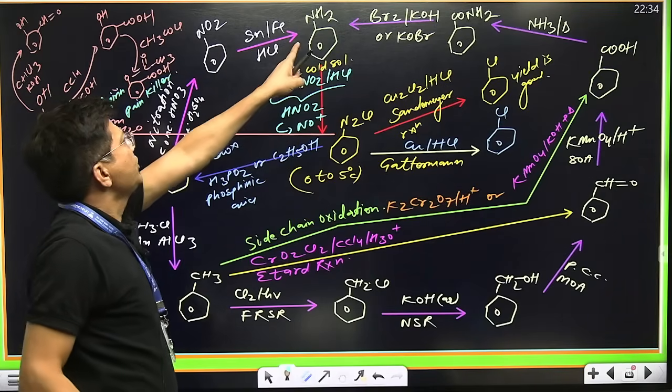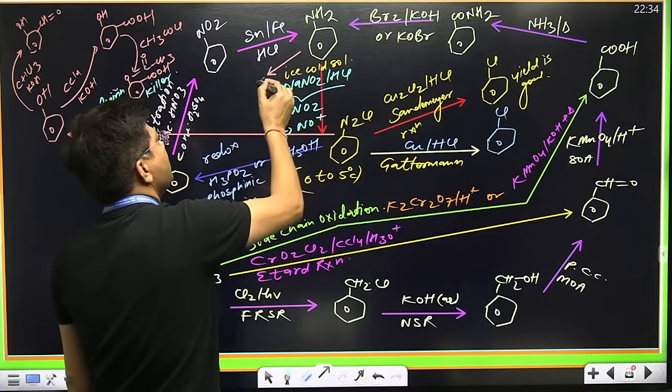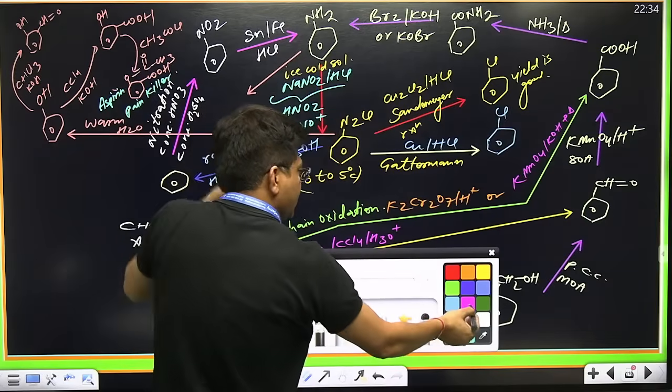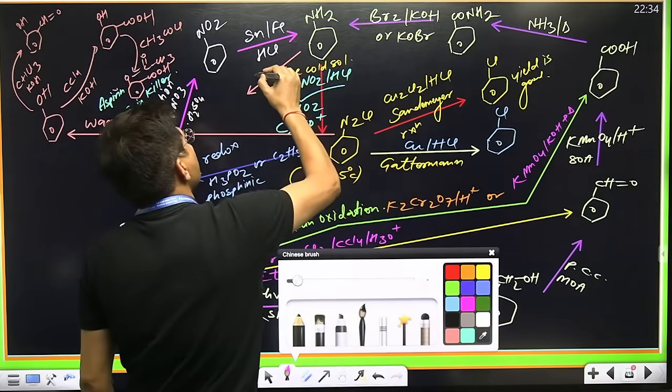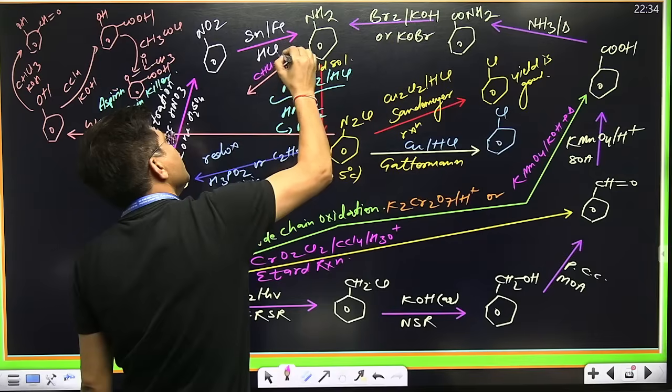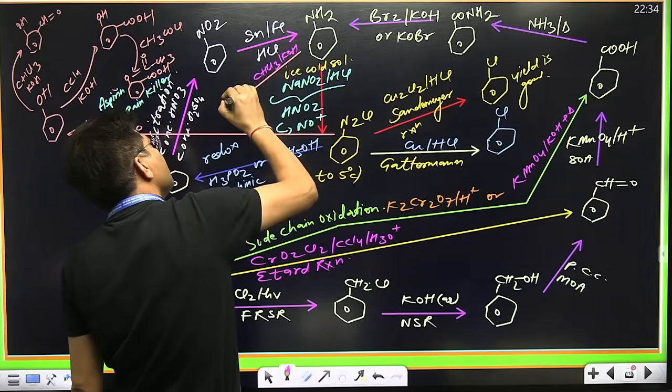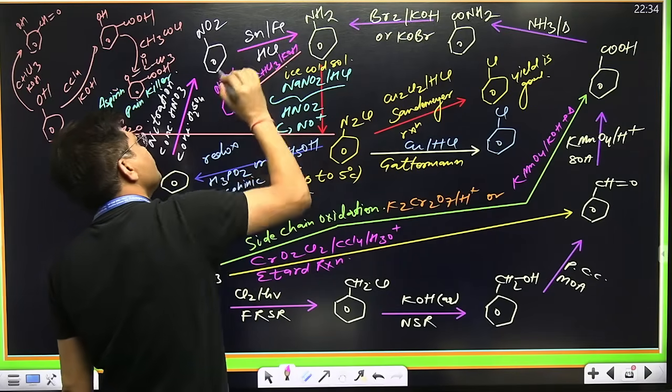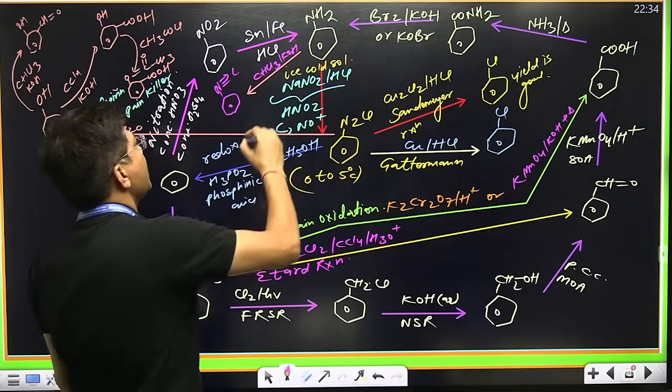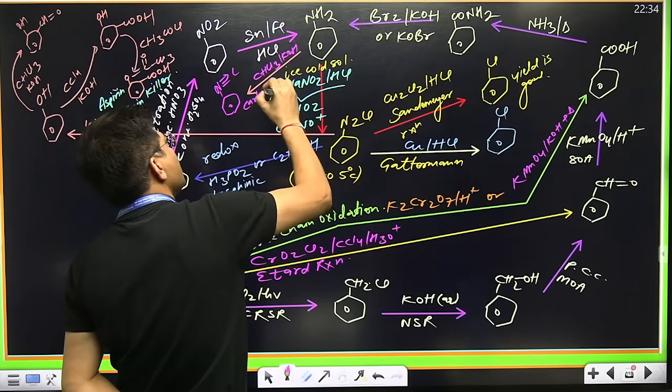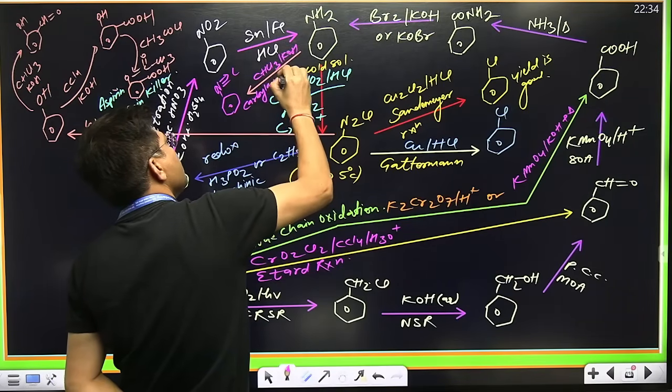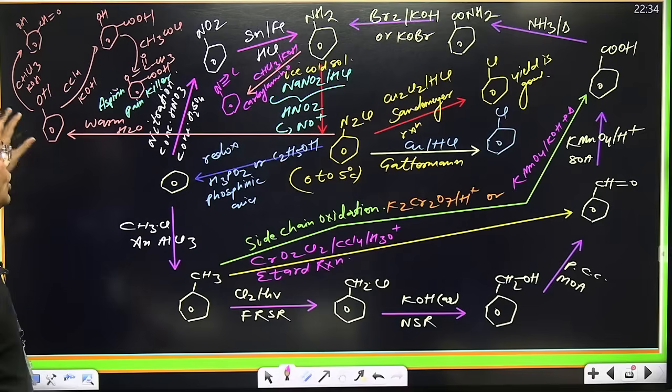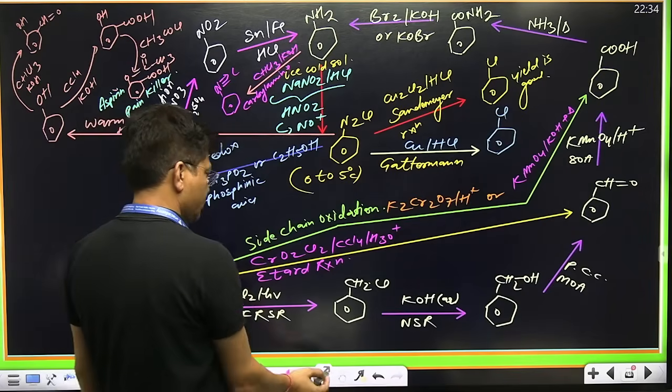Aniline is shouting, tell them my reaction. Which reaction? If you react aniline with CHCl3 and KOH, a bad smelling compound, foul smell, phenyl isocyanide will get formed. The name is carbylamine reaction.